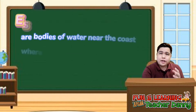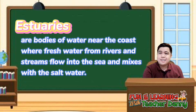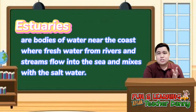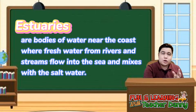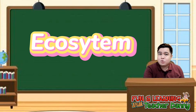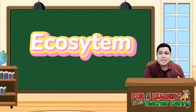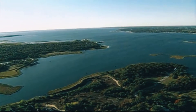In short, an estuary is the body of water near the coast where freshwater rivers and streams flow into the sea and mix with salt water. Did you know that the region of interaction between the river and the sea — what we call the estuary — forms an ecosystem? Now let's explore the ecosystem in the estuary.